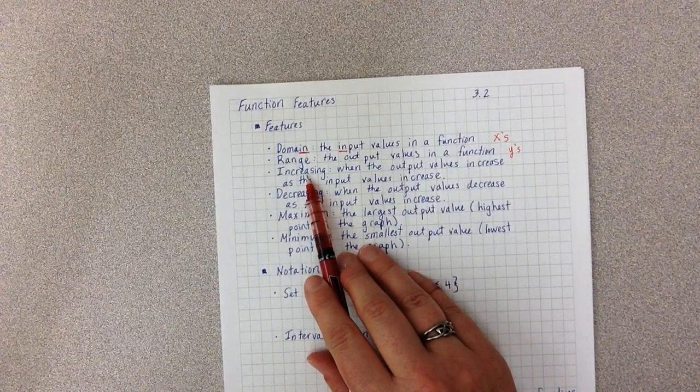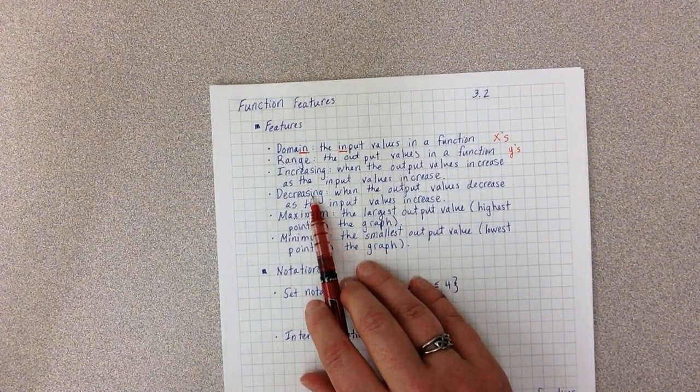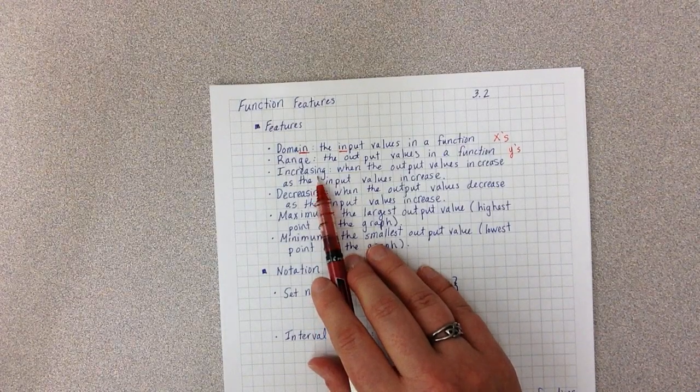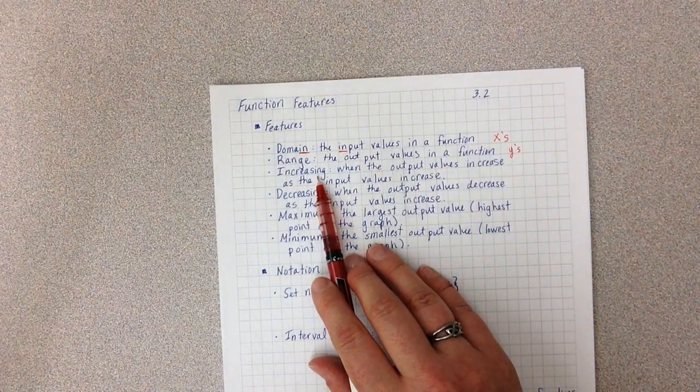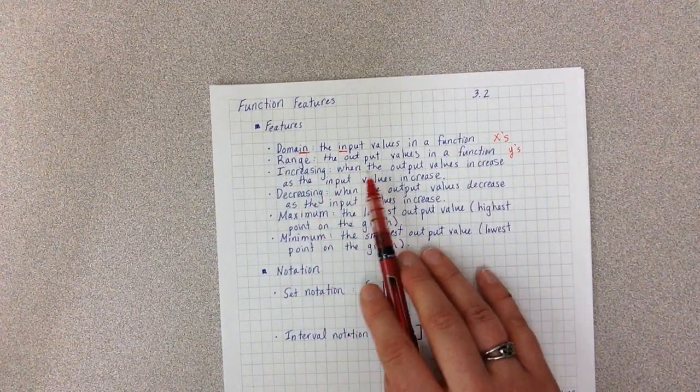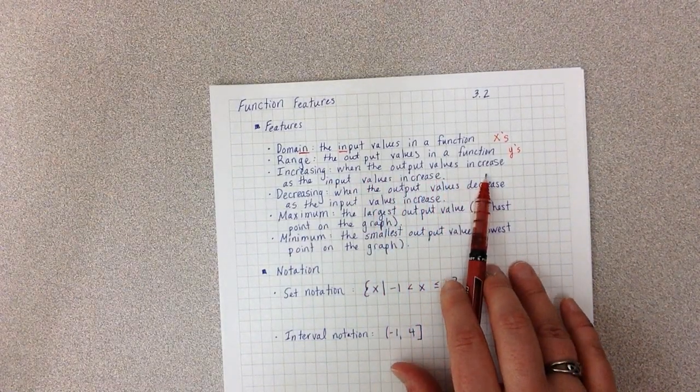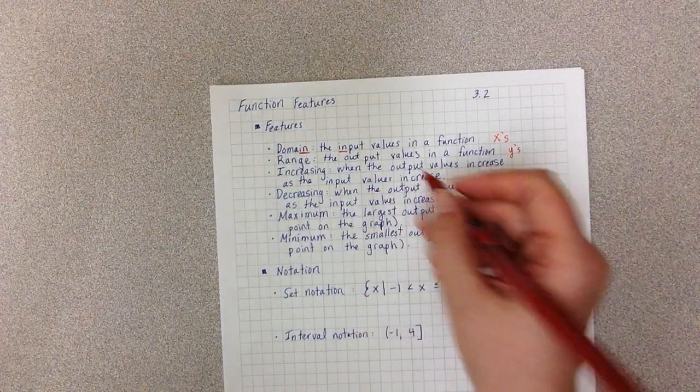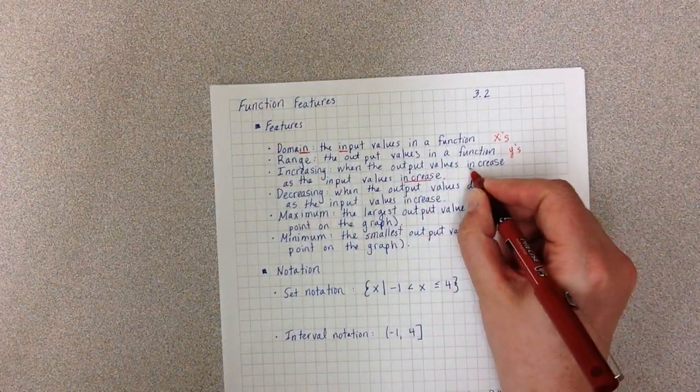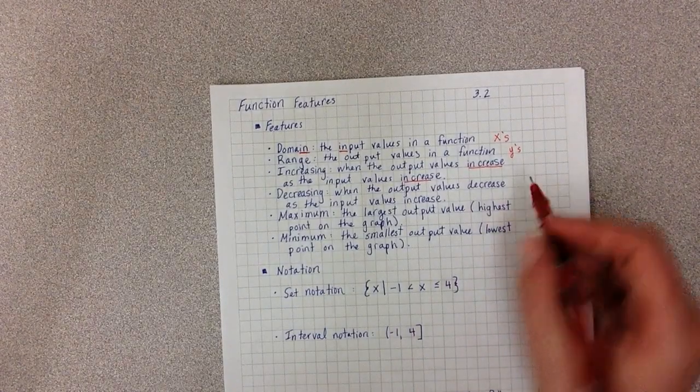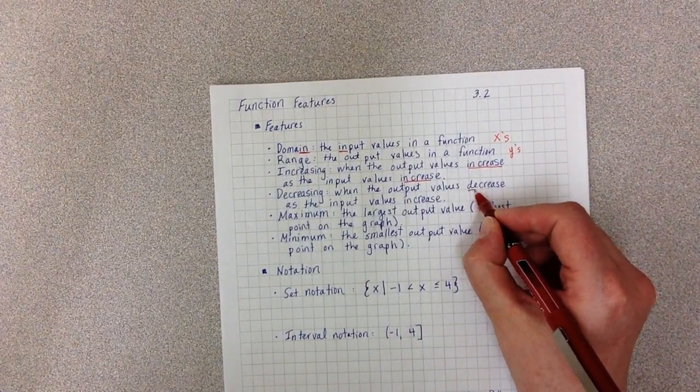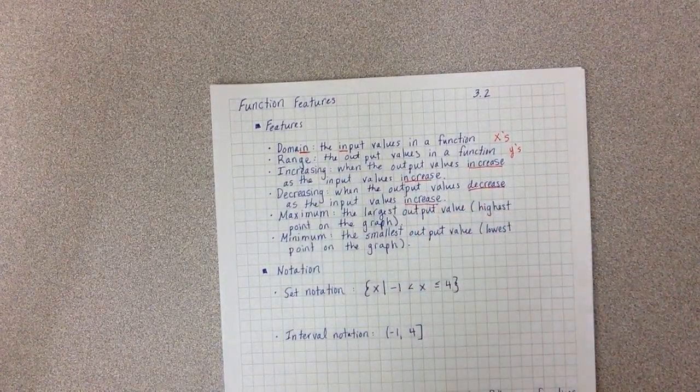We then can look at functions and see if they are increasing or decreasing. In simple terms, it's whether or not the function is going up or down. But the formal definition talks about that for increasing, it's when the output values increase as the input values increase. So we've got both increasing. Decreasing is when the output values decrease as the input values increase.